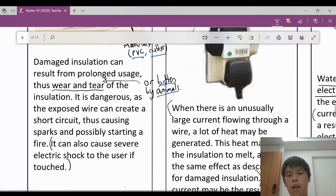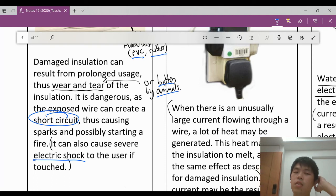So both of these can cause the insulation to be worn off and it can be very dangerous. Why? Because if anyone were to touch it, it can cause an electric shock to the user. At the same time, this exposed wire can also create a short circuit. This short circuit may cause and develop sparks and subsequently may cause an electric fire.